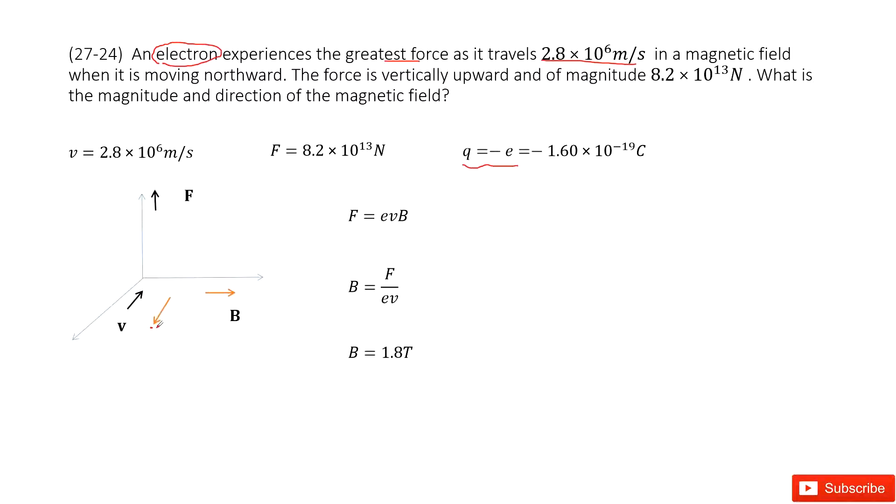So this time, because this current is a negative charge, we can think that the Q is negative. Now we can do the right-hand rule.